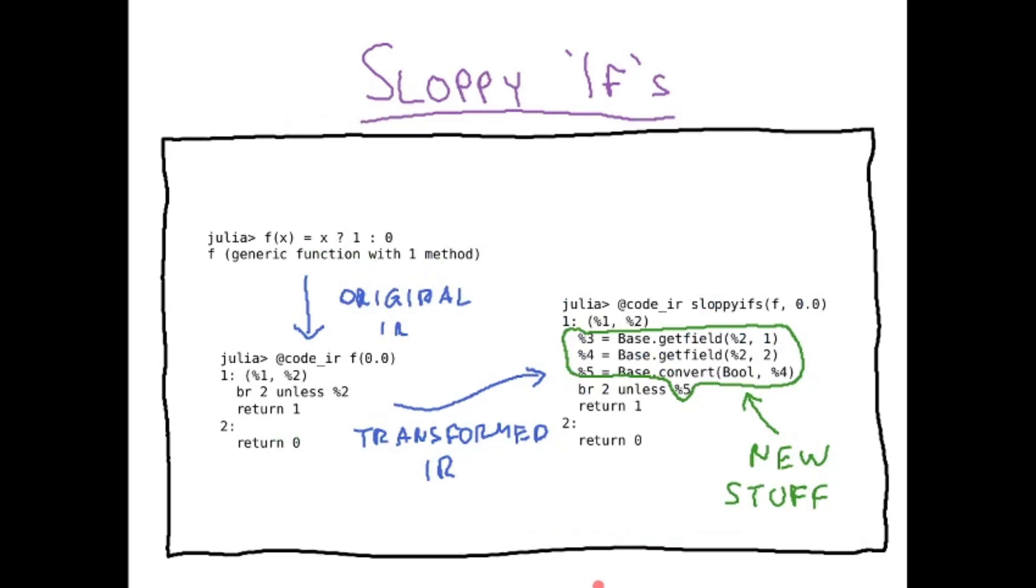An example of such transformation is shown here. We take a function f, the original IR of this can be obtained, and then we can, by another function sloppy_ifs, transform the original IR and extend it with basically this convert statement.